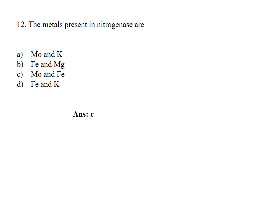The metals present in nitrogenase are: Option A, Molybdenum and potassium; B, Iron and magnesium; C, Molybdenum and iron; D, Iron and potassium. Answer Option C, Molybdenum and iron.